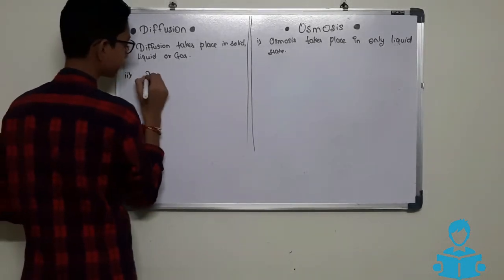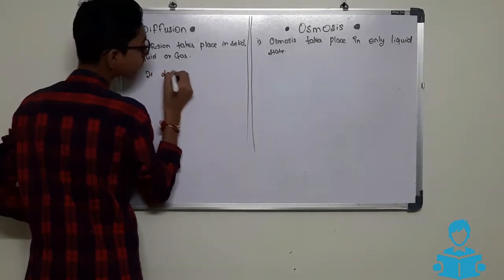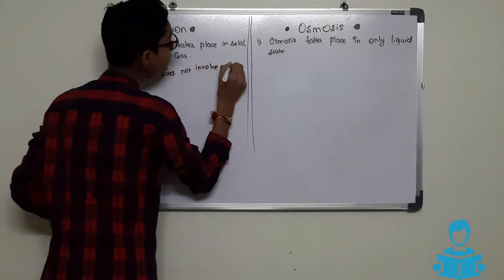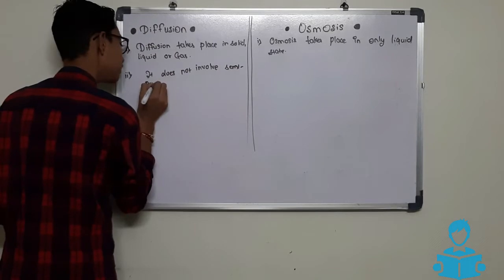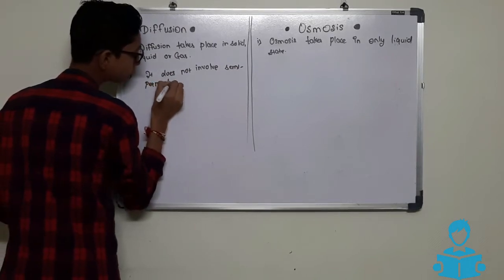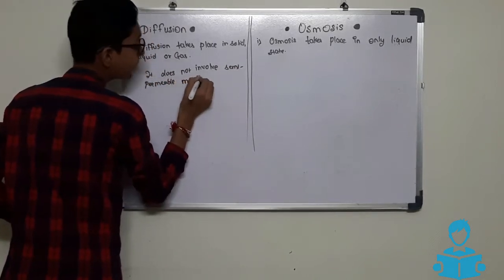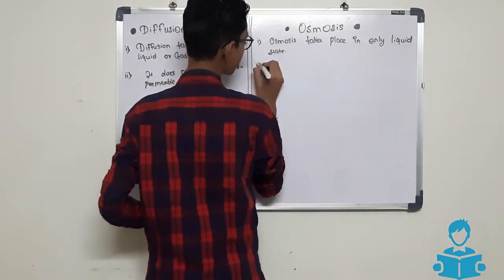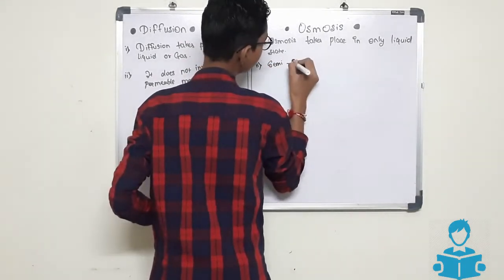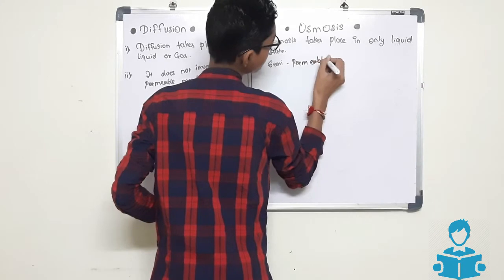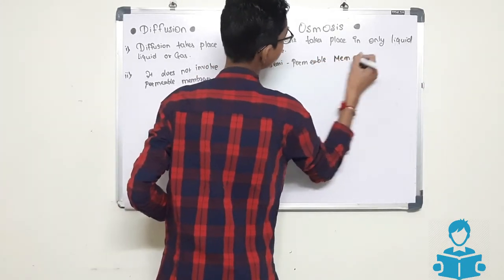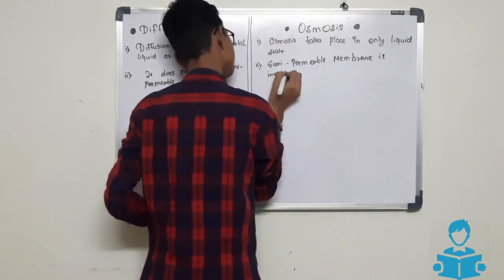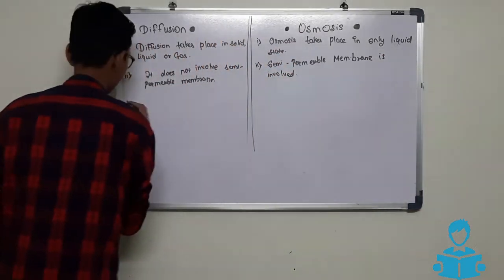The next difference is that diffusion does not involve a semi-permeable membrane. But in osmosis, a semi-permeable membrane is involved.